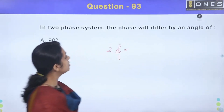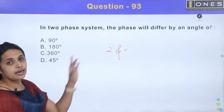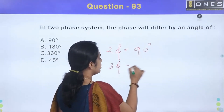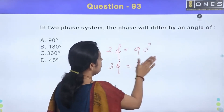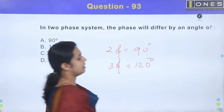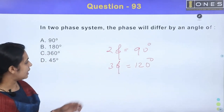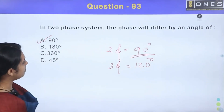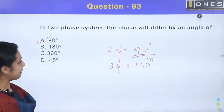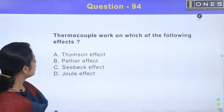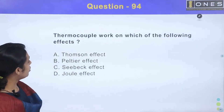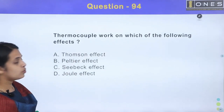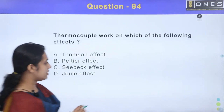In a two-phase system, the angle is 90 degrees. In a three-phase system, where is the angle of 120 degrees? We have done the thermocouple in the glass of the thermocouple cup.